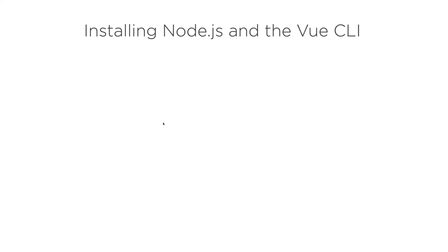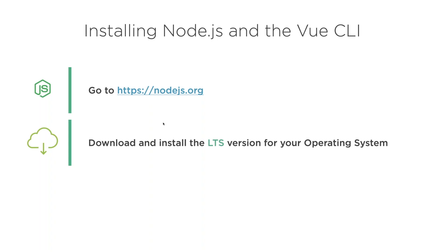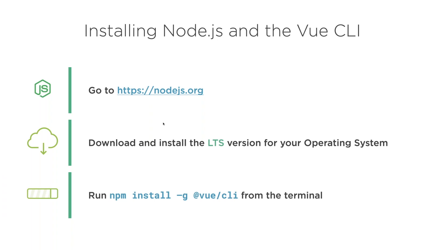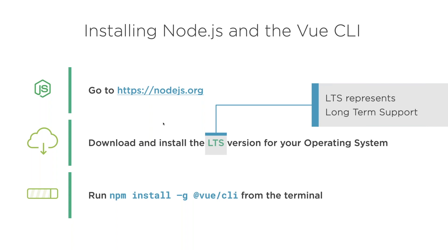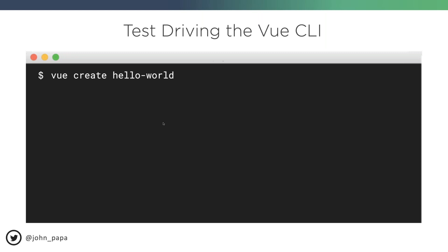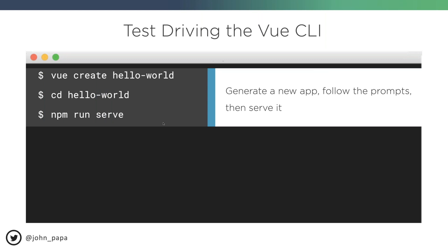To get started, install Node from nodejs.org — I recommend the LTS (long-term support) version. Then run 'npm install -g @vue/cli' to install the Vue CLI globally onto your computer. Once you have it, run 'vue create hello-world', cd into the hello-world folder, and run 'npm run serve' — that will build the application in memory and serve it into your browser. Easy.